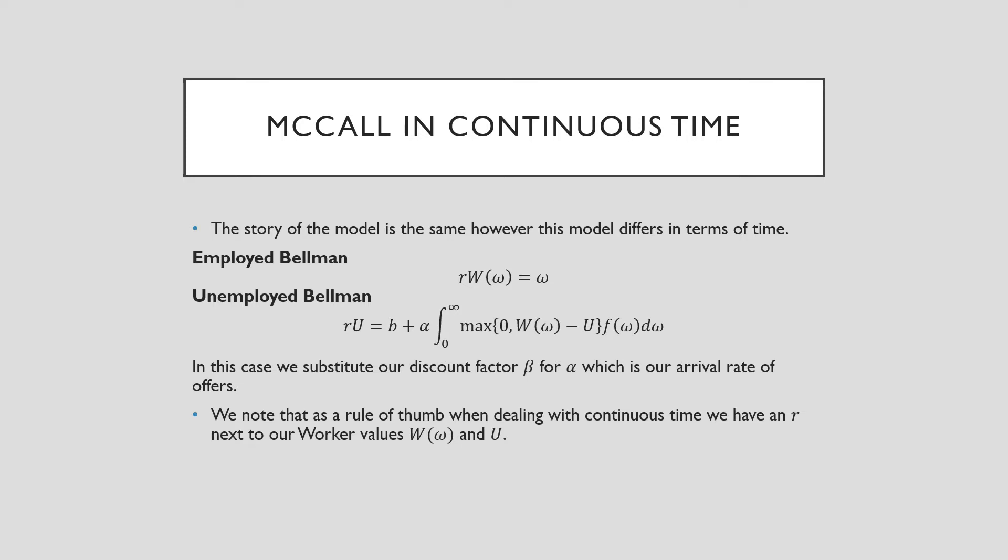So the McCall model in continuous time is the same story as before. However, our model differs in terms of time with the employed Bellman and unemployed Bellman as follows. We note that we have two things here. First, we have a lowercase r next to our values for our employed worker and unemployed worker on the left-hand side there. That's just something you do when we're talking about continuous time.